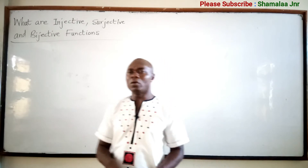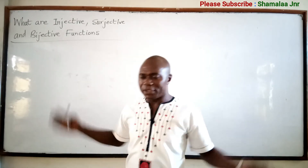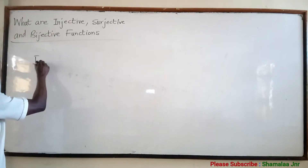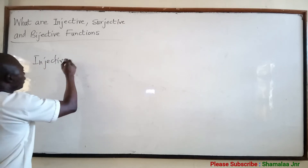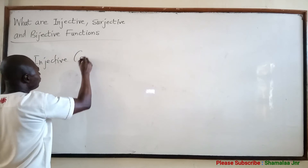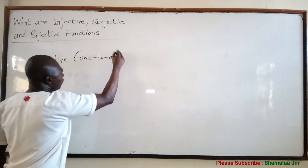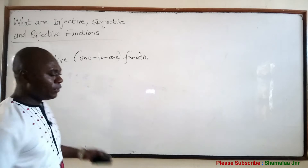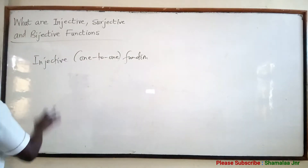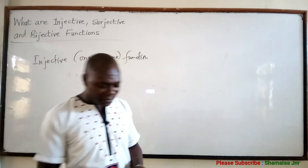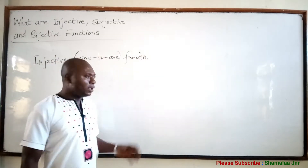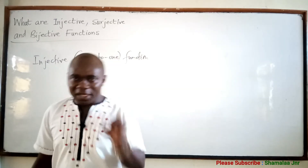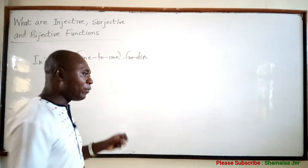When you say a function is injective, what do you mean? When you say a function is surjective, what do you mean? And when you say a function is bijective, what do you mean? An injective function is the same as a one-to-one function. Yes, when a function is one-to-one, then you say that it is injective. A function is said to be injective if each member of set S, that is the domain, is related to a distinct member of set Y, which is the co-domain.